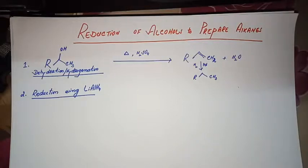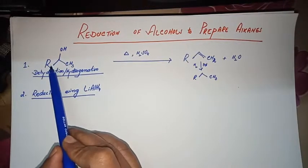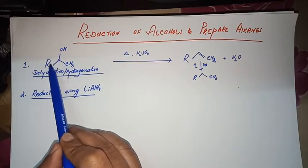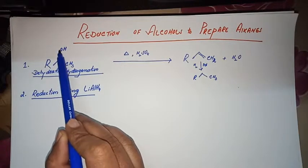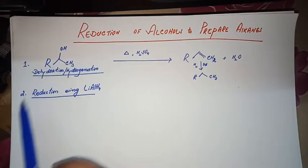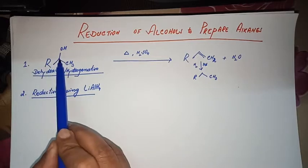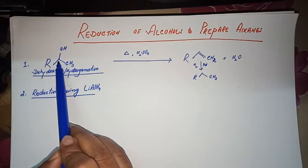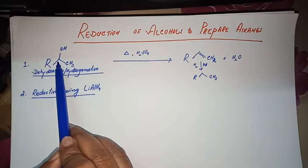In this section we shall see how to prepare alkanes from alcohols by their reduction. Our first option is, for example, we have this alcohol - this carbon is bonded to this hydroxyl group and this methyl group, one hydrogen atom. One method is that we have to dehydrate it, remove a water molecule.